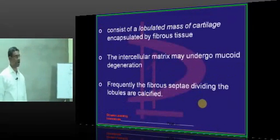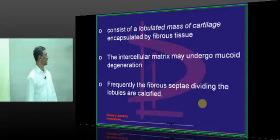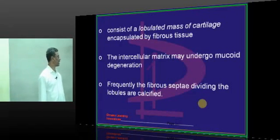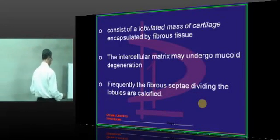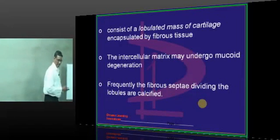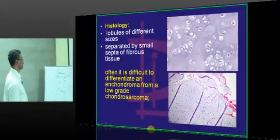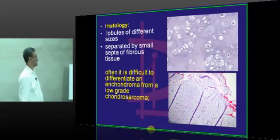The tumor consists of a lobulated mass of cartilage encapsulated by fibrous tissue. The intracellular matrix may undergo mucoid degeneration because it is cartilage within fibrous tissue. Frequently, the fibrous septa dividing the lobules are calcified - this calcification of fibrous septa is another characteristic feature of enchondroma.